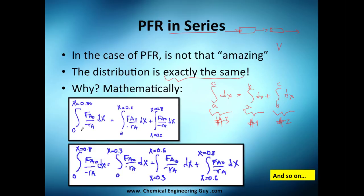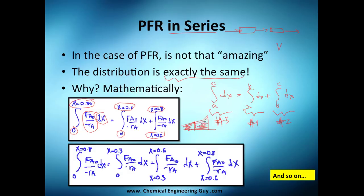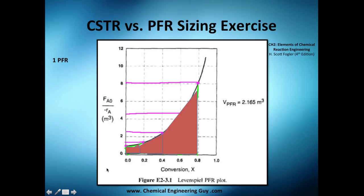Let me give you an example more in reactor engineering terms. You start with zero conversion, and you have the value of F_A0 over minus r_A versus conversion. You could break the integral from 0 to 0.2 and from 0.2 onward — since you are calculating the area under the curve, it will not change. You can split it as 0 to 0.3, 0.3 to 0.6, 0.6 to 0.8 — that gives three reactors, but you still get the same total volume as one reactor.